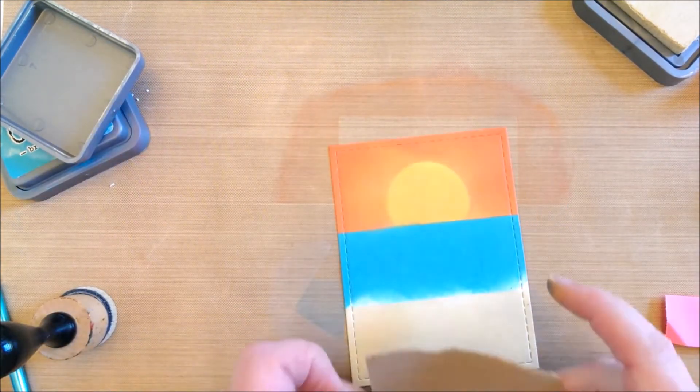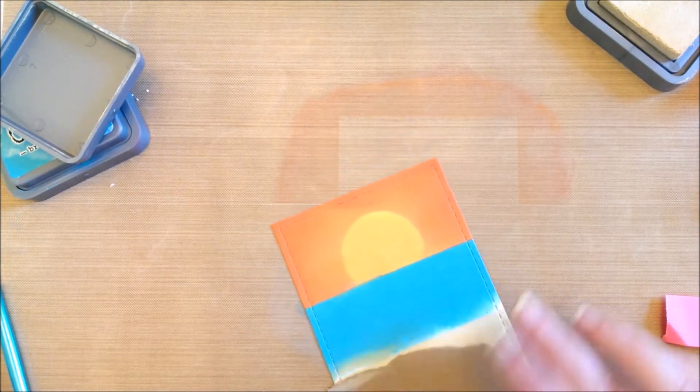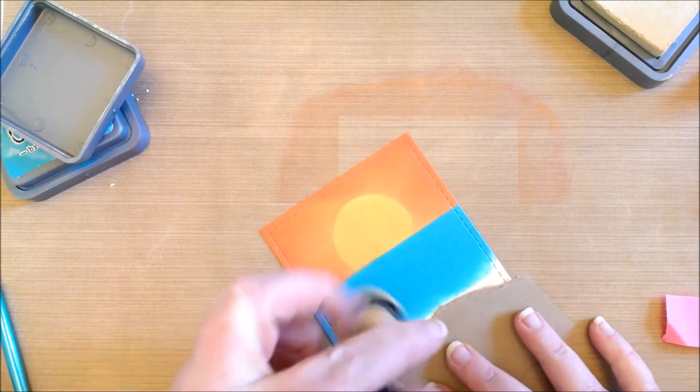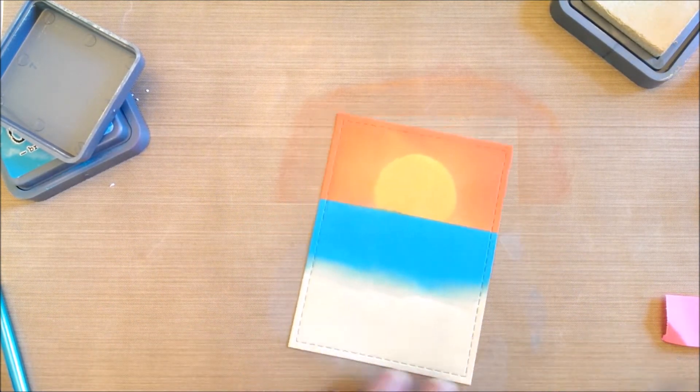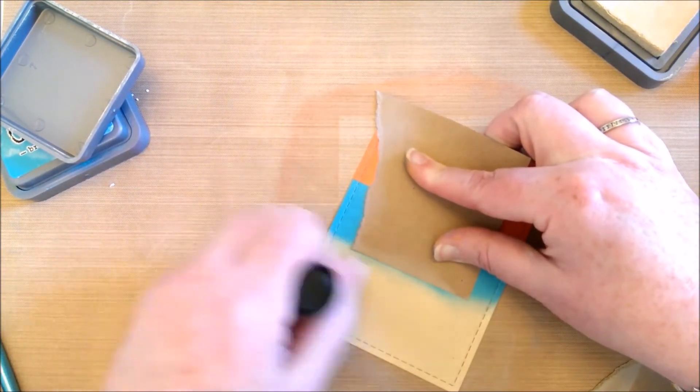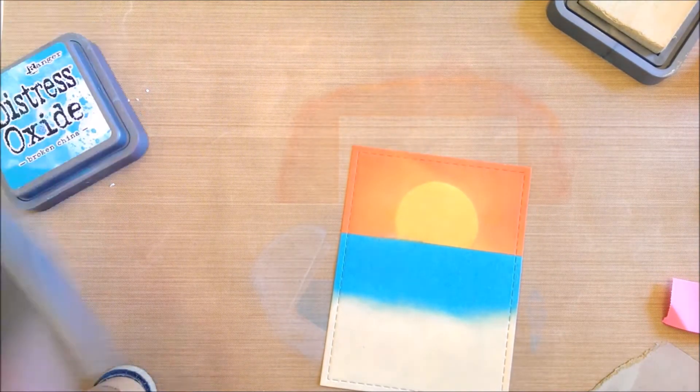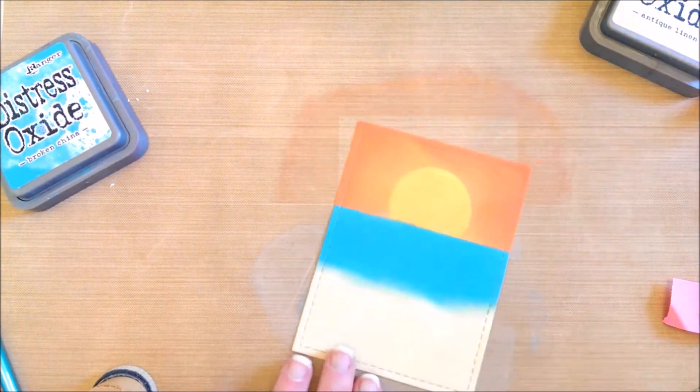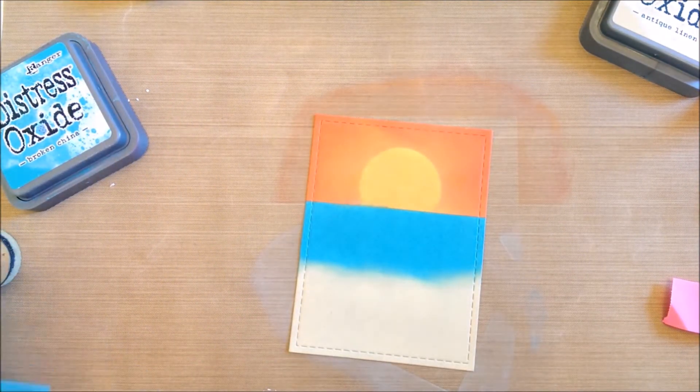You can see I'm using scraps of card just to put on the card while I ink, because it leaves fingerprints if you touch the card because the ink is still wet. Then I just tore a piece of card to create a jagged line, and then I'm sponging that over to create a jagged line on the sand.